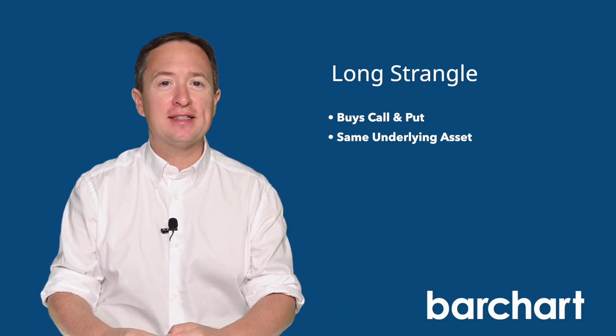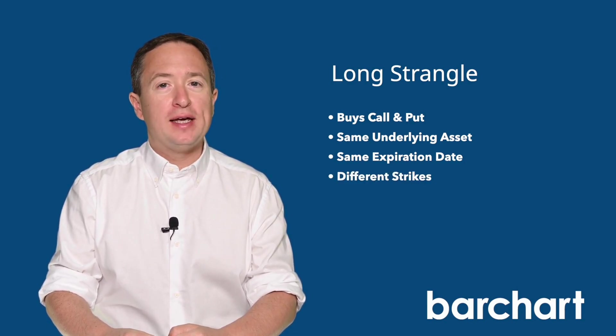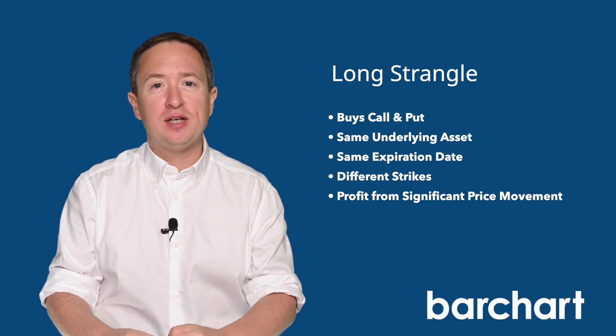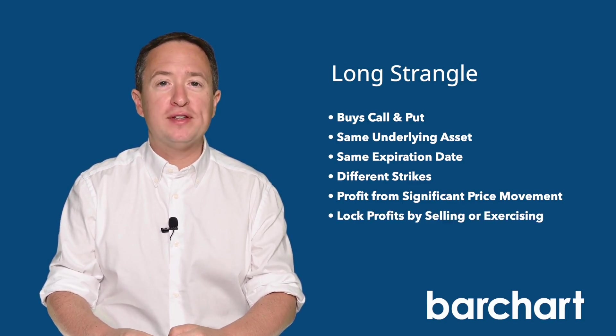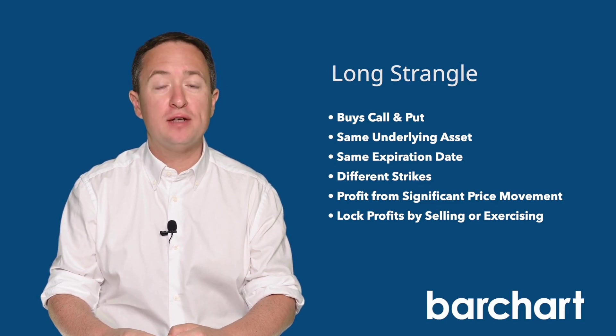A long strangle is a directional option strategy where the trader buys a call and a put option on the same underlying asset with the same expiration date but with different strike prices. The goal of a long strangle is to profit off an asset's significant price movement, and profits can be locked in upon exercising or selling the profitable trade before expiration. The strategy is often used when a trader anticipates a significant price movement in the asset but is unsure of the direction.